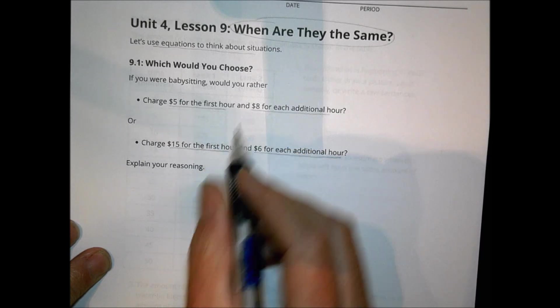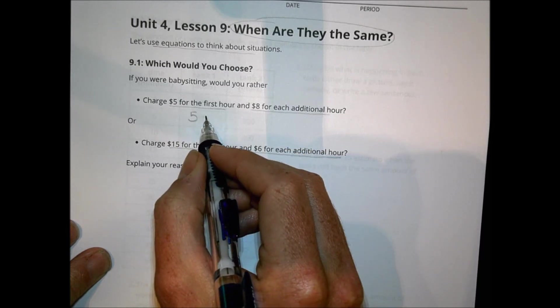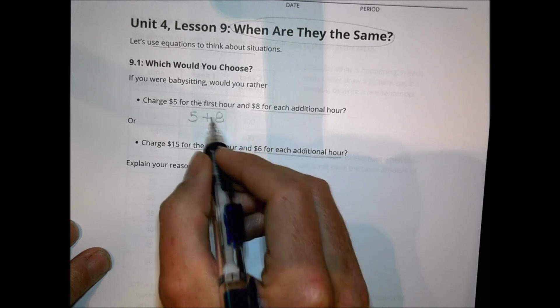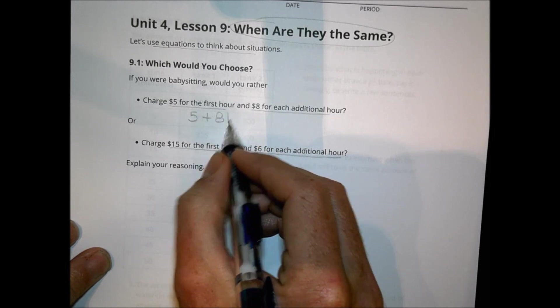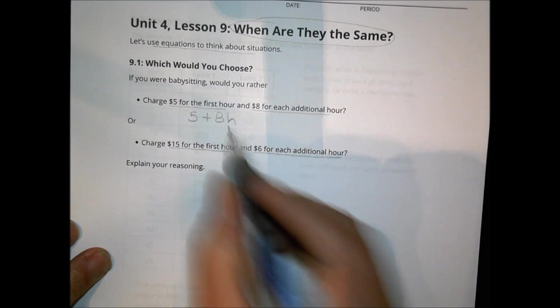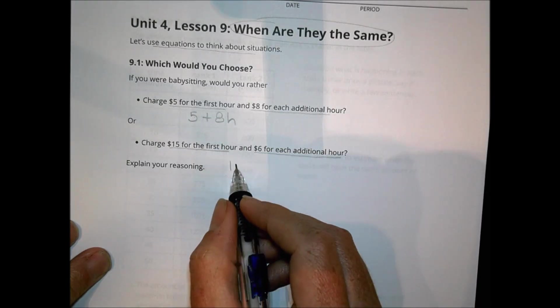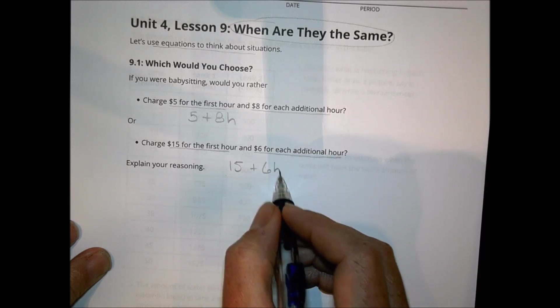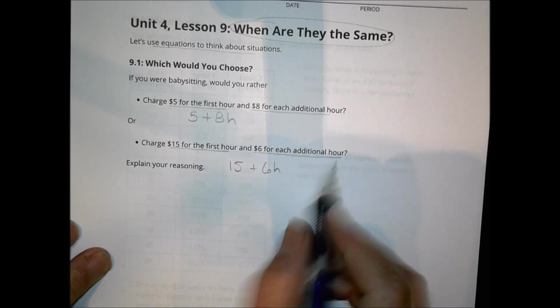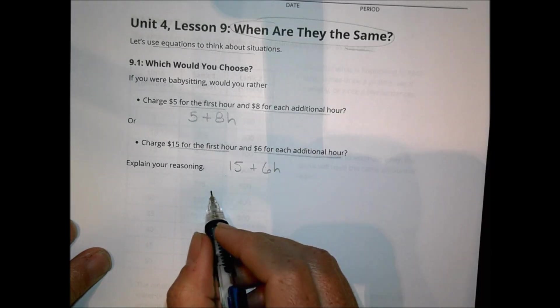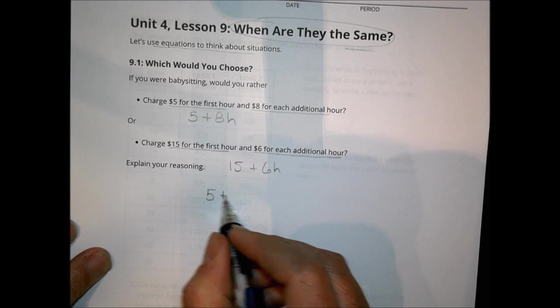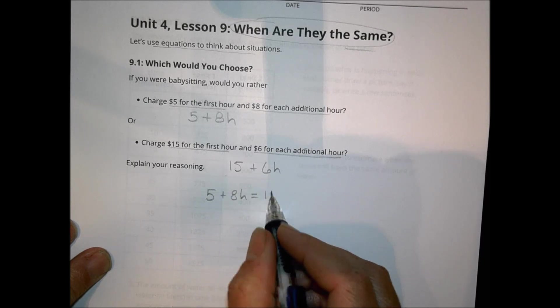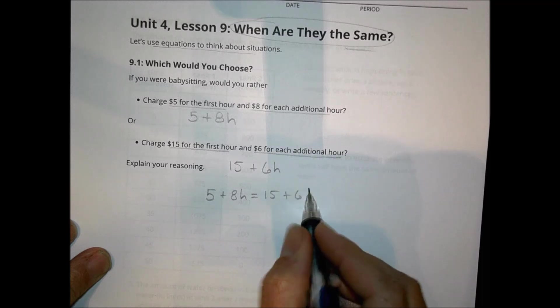For the first equation, you're making $5 at the start, and then every hour you work, you're going to get $8. So we could write that as 5 plus 8 times H, H being the number of hours you work. In this way over here, you get $15 to start, and then you get an additional $6 for each hour you work. If we wanted to see at what point they are the same, we could actually set the two equations equal to each other to find out when the hours would be equal. So we set it up like this, and we solve for H.